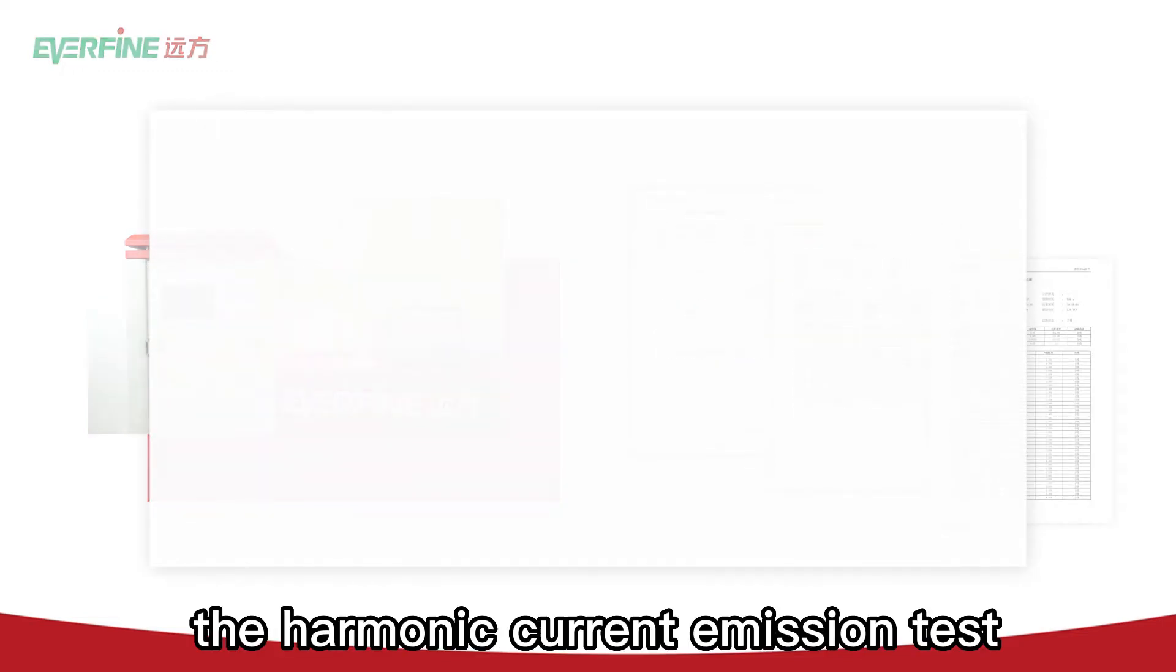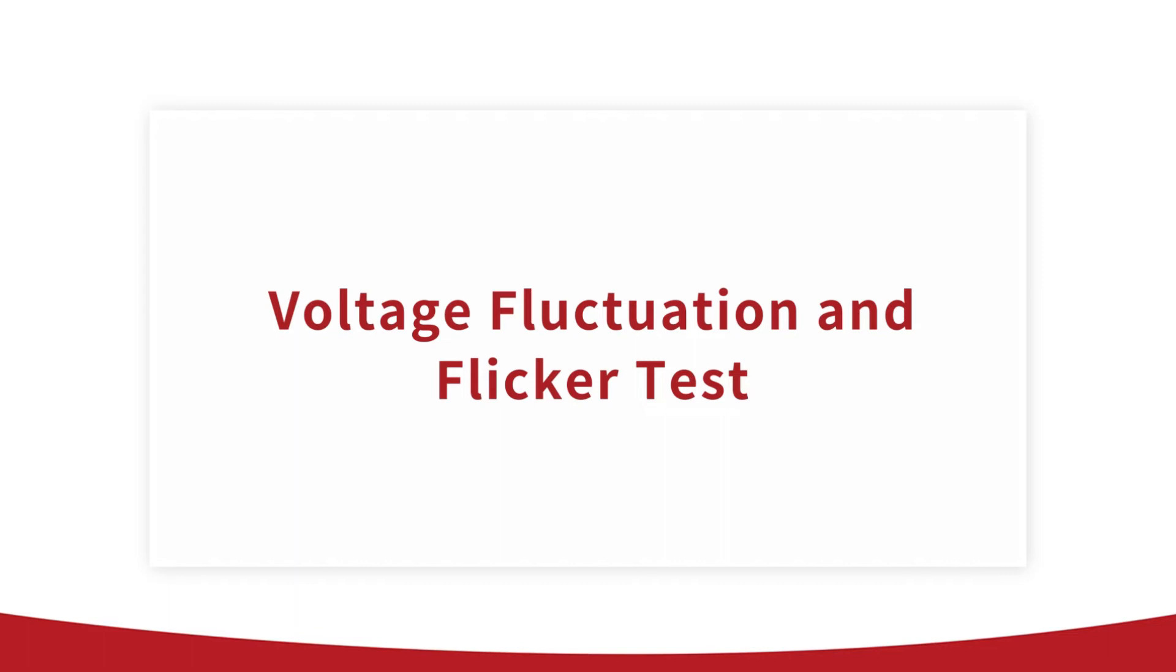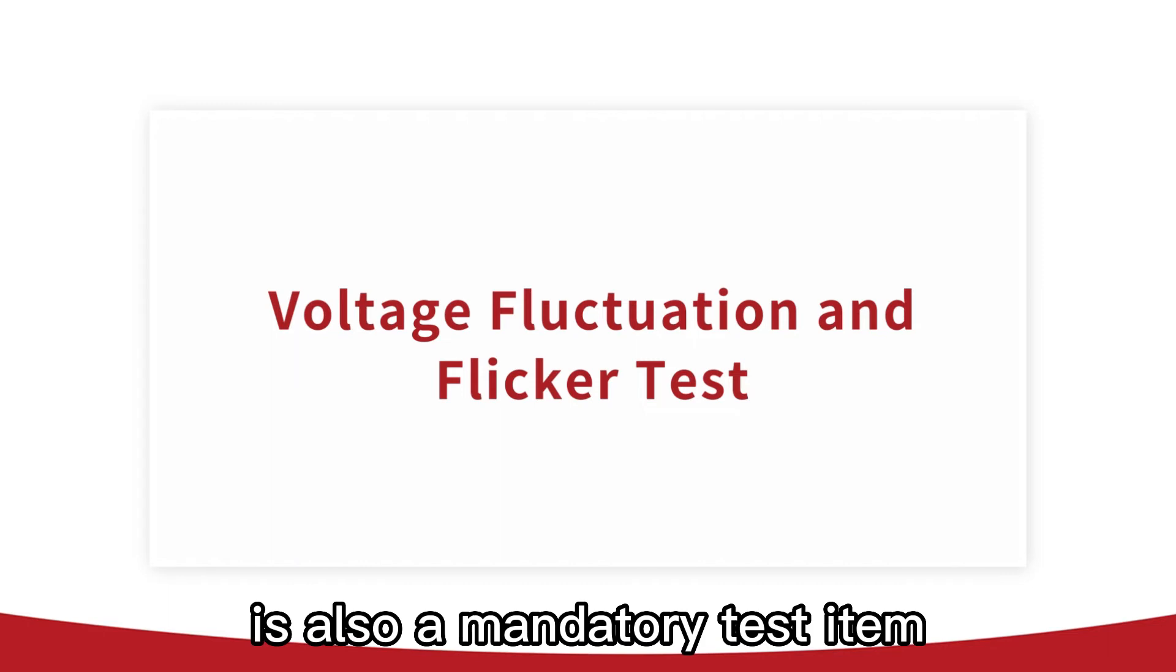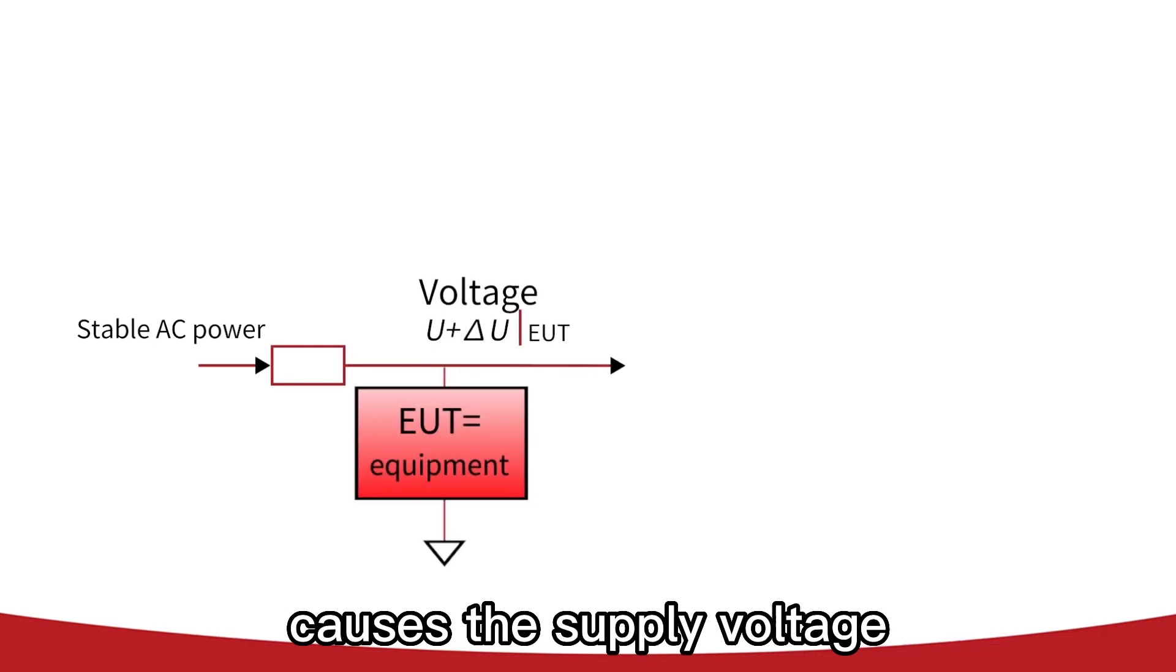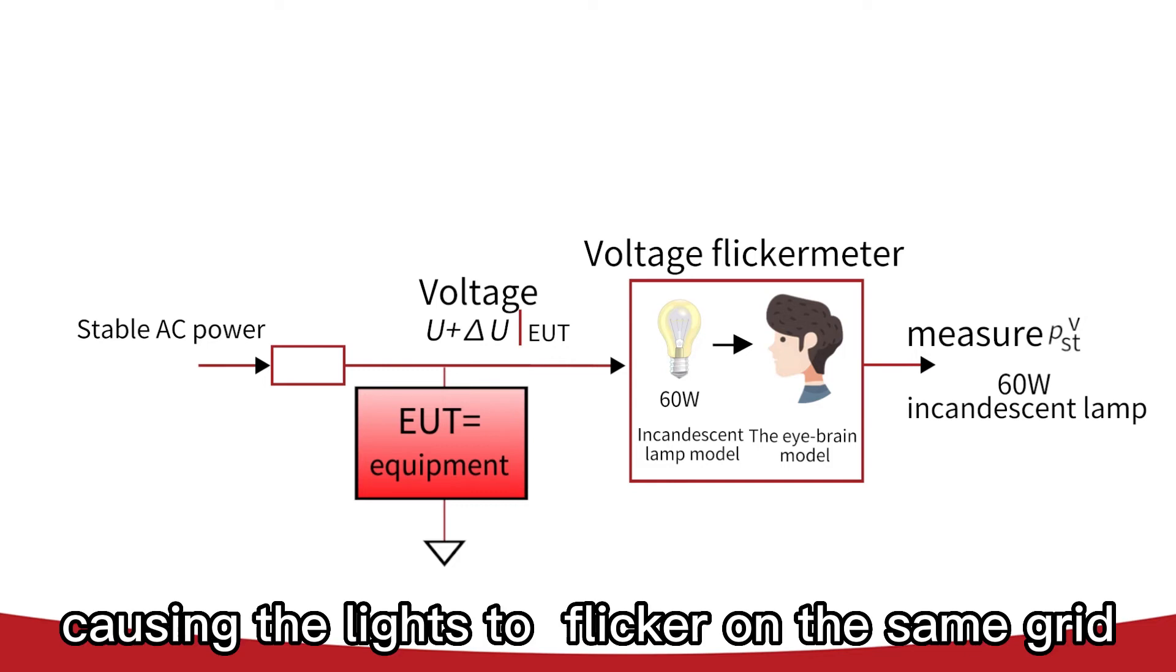In addition to the harmonic current emission test, voltage fluctuations and flicker test is also a mandatory test item in accreditation. It describes how the fluctuating load causes the supply voltage at the point of supply to change, causing the lights to flicker on the same grid.